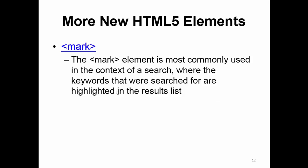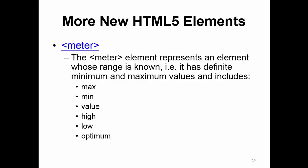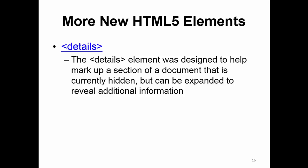The mark element is most commonly used in the context of a search. Progress is used to show current status — basically like a progress bar. Meter represents an element with a known range, meaning it has a minimum and maximum. Time is designed to deal with problems that humans have reading dates and times differently from how machines read them — again, along with the semantic idea of making things more understandable for both humans and machines. Details is designed to help mark up a section that is currently hidden but can be expanded later.